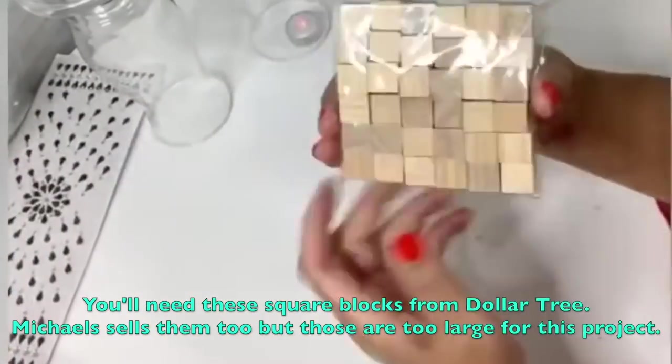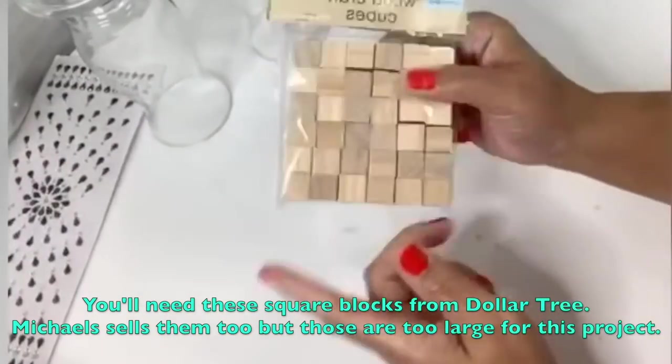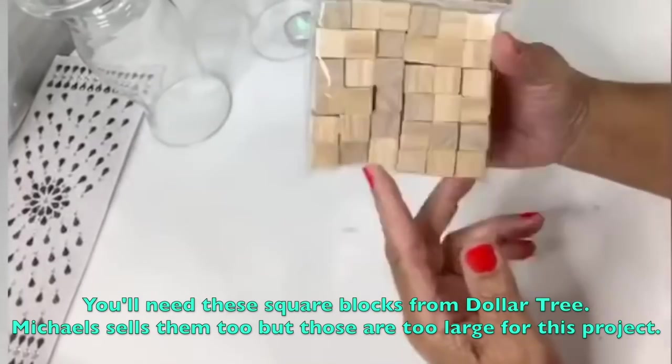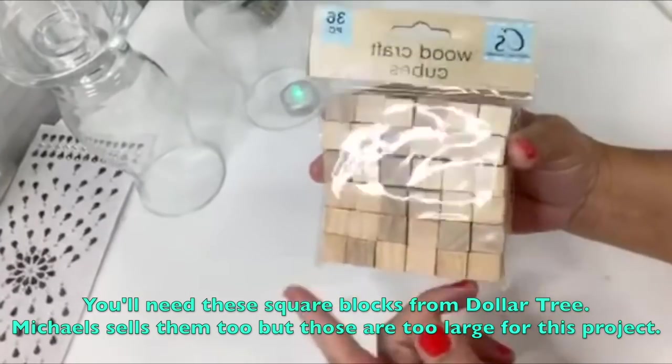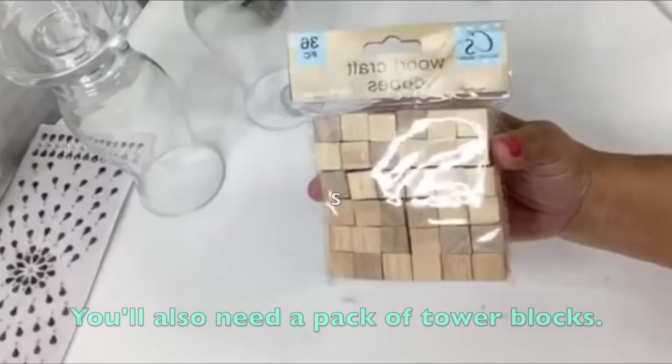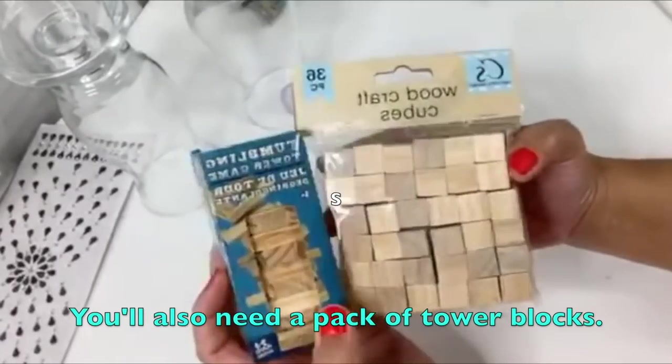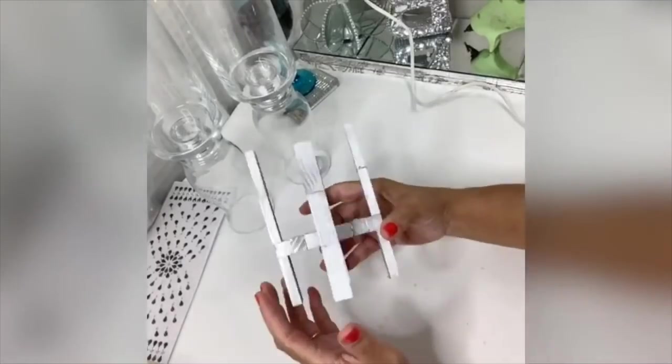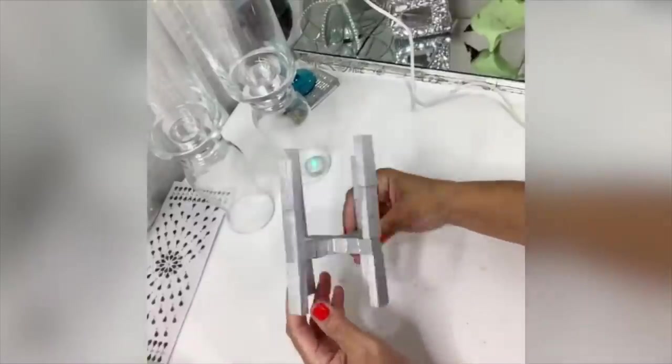To start, grab some of these little squares from Dollar Tree. They have these at Michael's too, but those are bigger. I prefer that you get these and some tower blocks and build.